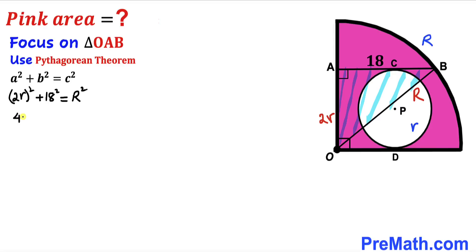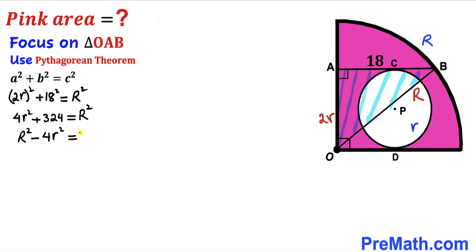Simplifying: 4r² + 324 = R². Moving 4r² to the other side gives us R² − 4r² = 324. I'll label this as Equation 1.